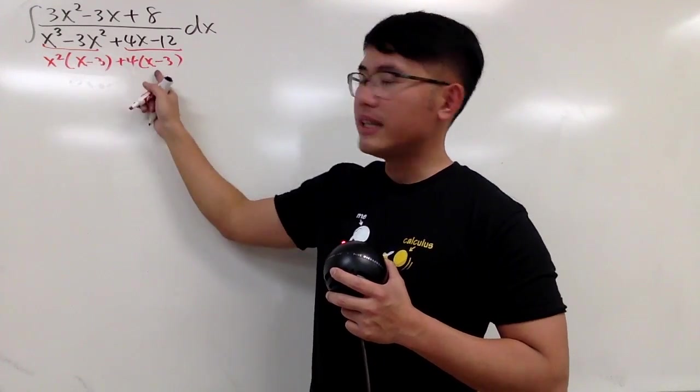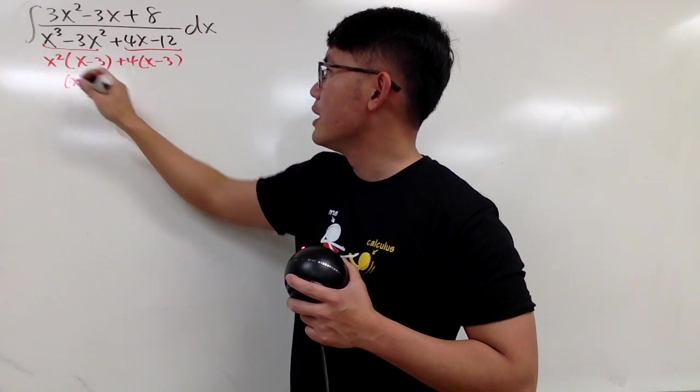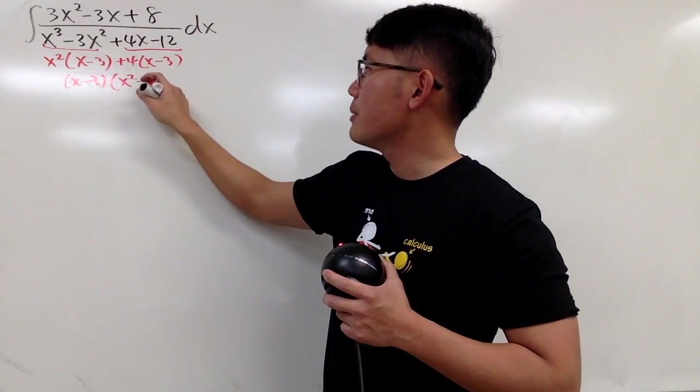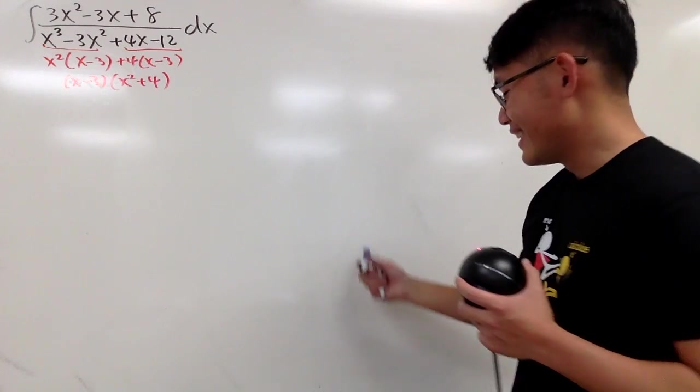And then, of course, this and that are common factor, we can take that out as well. So we have x minus 3, and then we can just have x squared plus 4, like this. Alright, so that's pretty much it for the factoring.